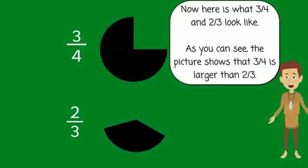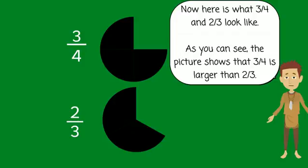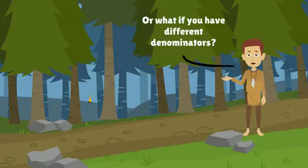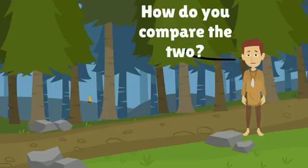Now here is what 3-4ths and 2-3rds look like. As you can see, the picture shows that 3-4ths is larger than 2-3rds. But what if you don't have a picture? Or what if you have a problem that involves fractions with different denominators? How do you compare the two?